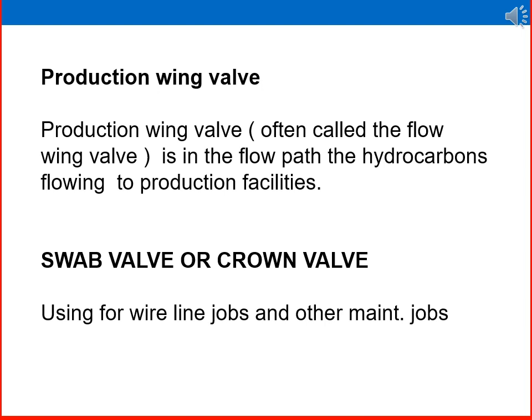During maintenance, the production wing valve is closed and the swab valve is opened, allowing wireline cameras to be inserted into the well to see what is inside and determine a suitable method to rectify the problem.